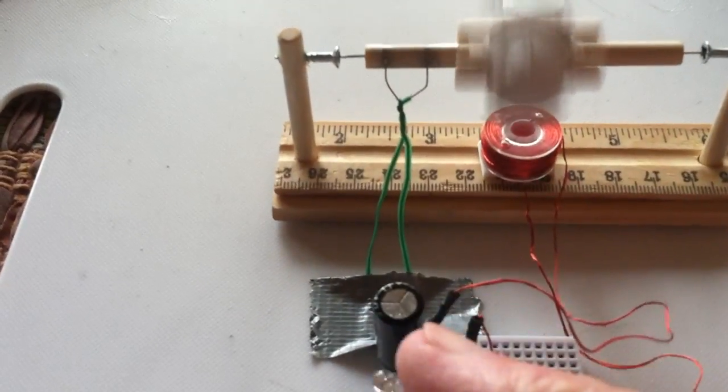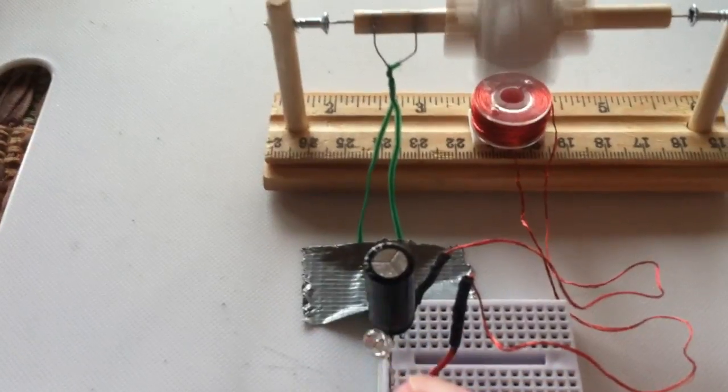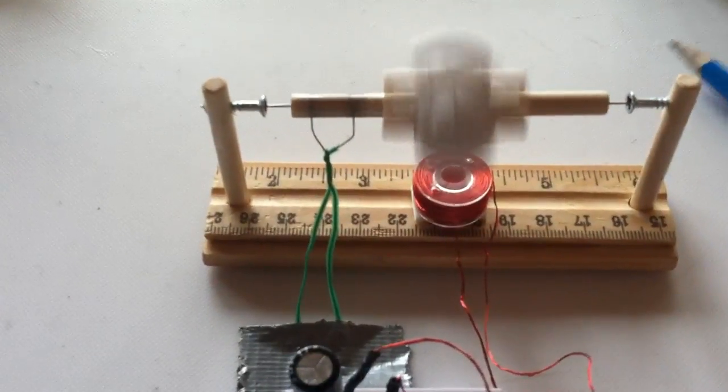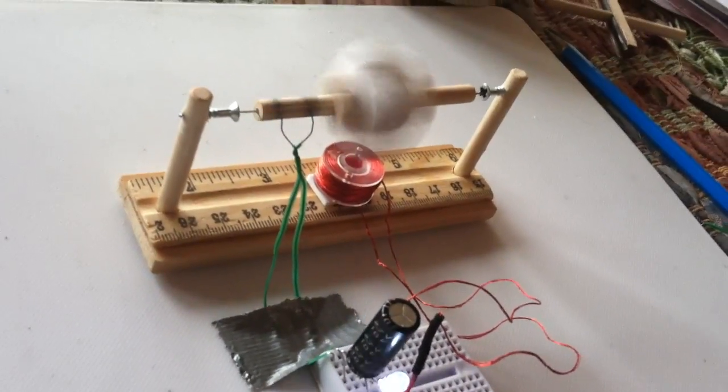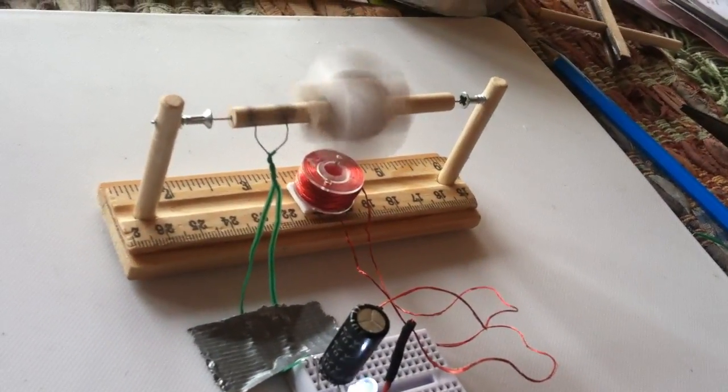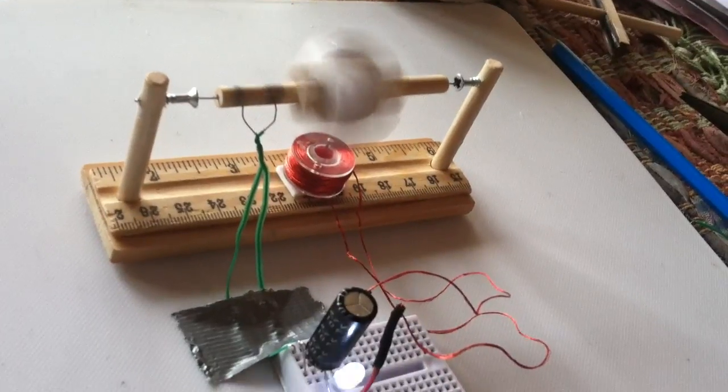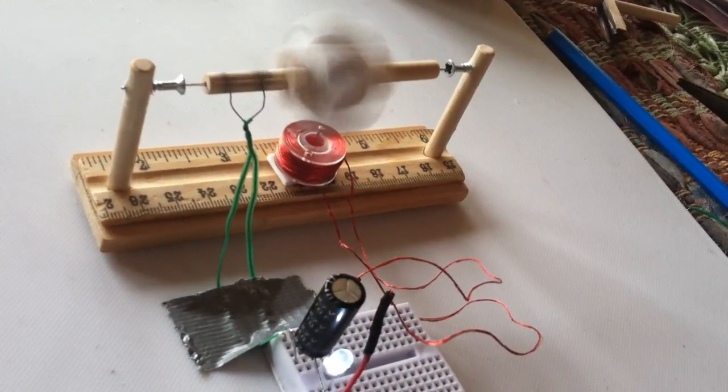And then the energy is coming out of a super capacitor with a LED across the coil. Anyway, it's just a real simple little motor I thought I'd share. It only fires on the one pole at the bottom in repulsion.